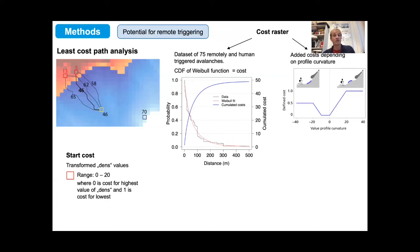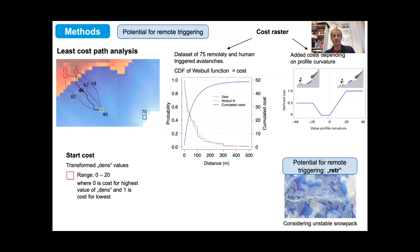The calculation of the path was stopped at a threshold value of 70, resulting in another layer which we can see on the right.